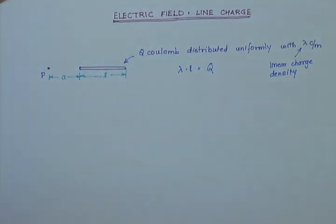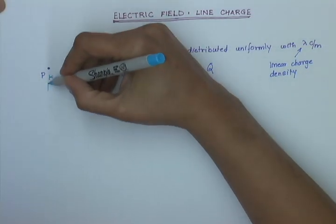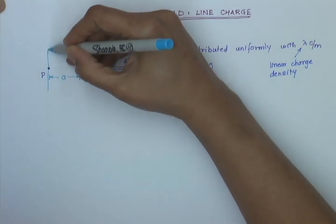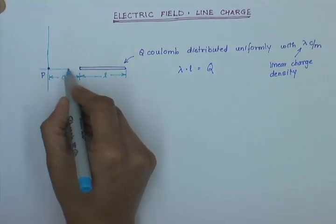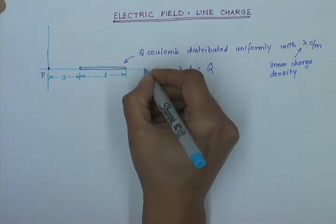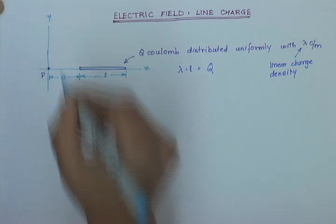So, let us see how to find out the electric field of this rod at point P and to do that, first I will take my axis such that my y axis passes through point P and the x axis is along the rod. So, this is my x axis and this is my y axis.